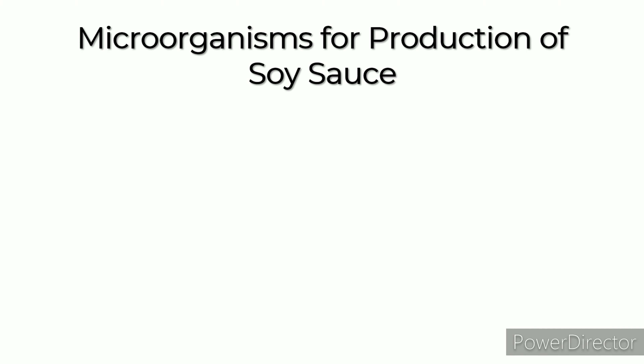For the production of soy sauce, soybeans are steamed and wheat is roasted and crushed. Then the mold koji is added to the cooked ingredients and koji is made. Salt is dissolved in water and added to the koji. The product is then filtered, undergoes heat treatment and refining, and is finally inspected and bottled.